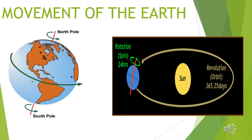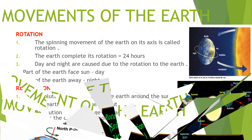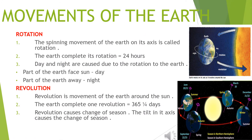Movement of the Earth — Rotation: the spinning movement of the Earth on its axis is called rotation. The Earth completes one rotation in 24 hours. Day and night are caused due to the rotation of the Earth.